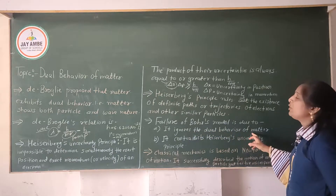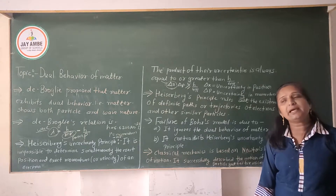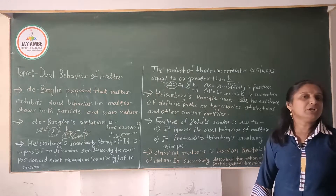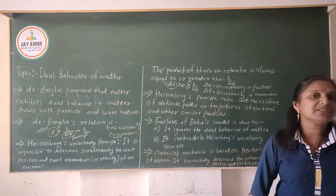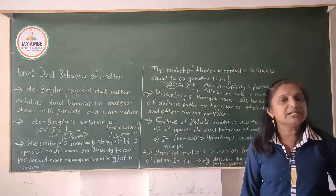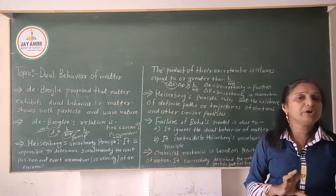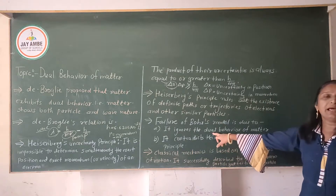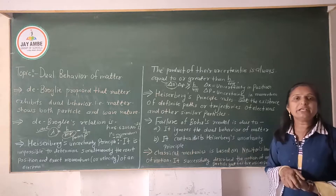Bohr's model ignores the dual behavior of matter. It explained the hydrogen spectrum but had some failures. When the fine structure of the spectrum was examined, the model failed because it ignored the fact that matter has dual nature — both particle nature and wave nature. This dual nature is important for understanding the fine structure of atomic spectra.